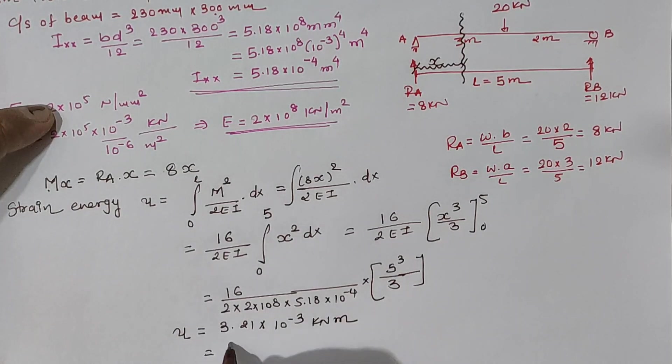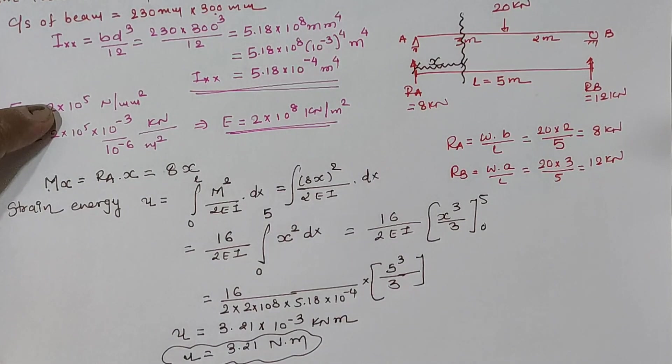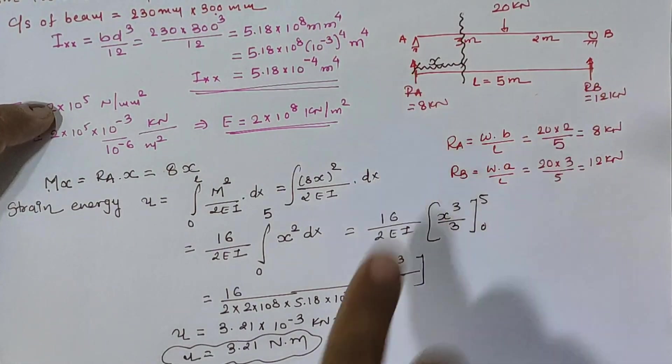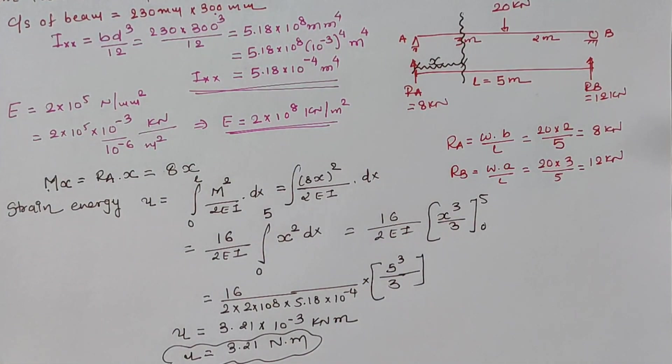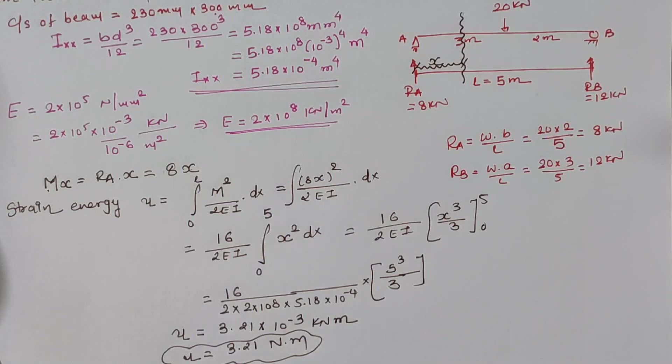Hence, it is 3.21 newton meter. So, for given beam, the strain energy stored in the beam is 3.21 joule or newton meter. Thank you.